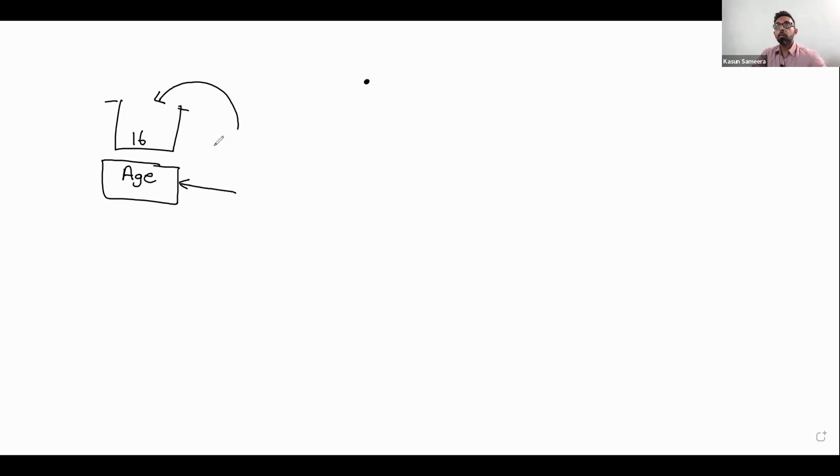What is a variable? It's something like a container - we can hold a value. Actually, inside the computer, the program is running inside the random access memory, RAM. We are making small memory spaces and we name it using a name. You have to give a name.